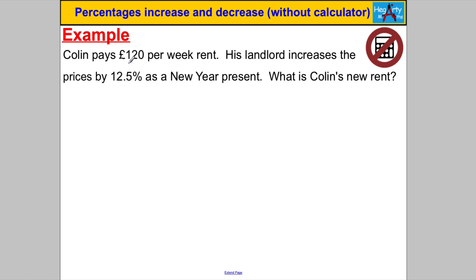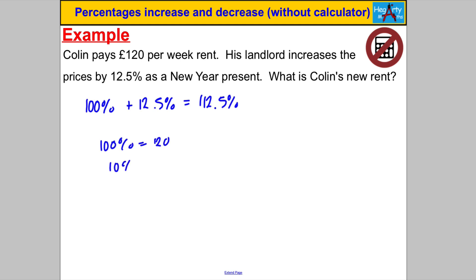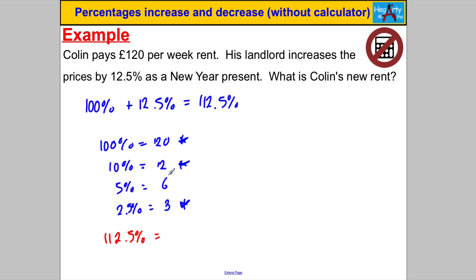Last one — a worded problem. Colin pays £120 a week rent. His landlord increases the rent by 12.5%. What's his new rent? 100% + 12.5% = 112.5%. 100% = £120, 10% = £12, 5% = £6, 2.5% = £3. 112.5% = 100% + 10% + 2.5% = £120 + £12 + £3 = £135. The answer is £135. And that's it — we're done for this video.